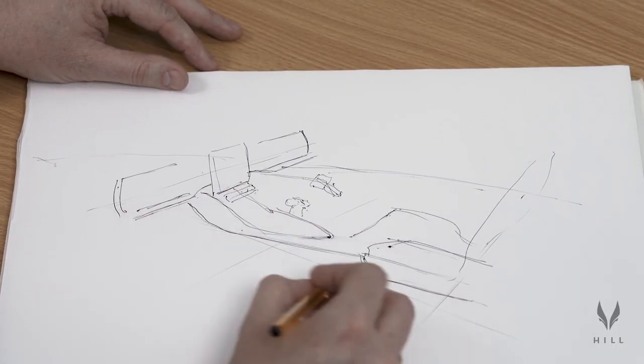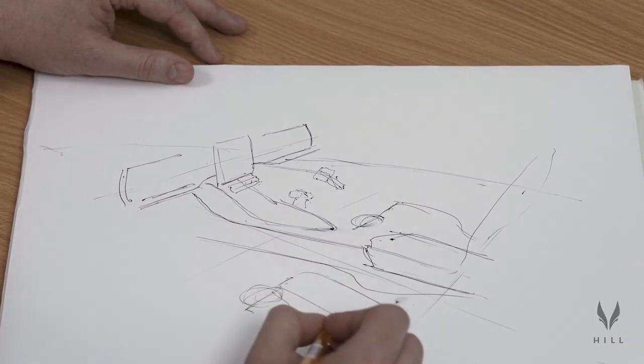Traditional helicopter flight controls are industrial at best. Our approach is to modify the action of the collective. Rather than being up and down it becomes a fore and aft motion, so that's fundamentally compatible with having an armrest in the centre of the cabin making long flights much more comfortable.